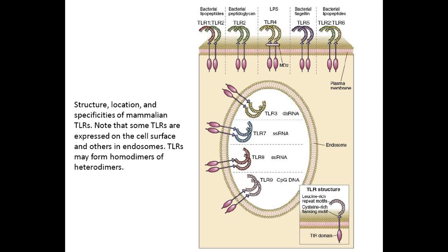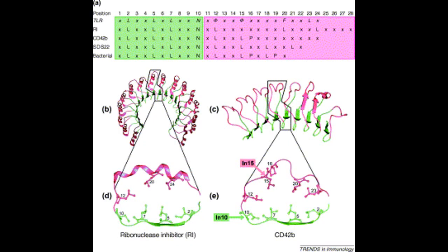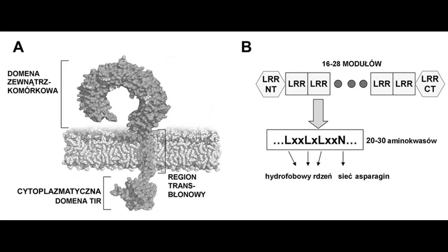Structure, location, and specificities of mammalian TLRs: Note that some TLRs are expressed on the cell surface and others in endosomes. TLRs may form homodimers or heterodimers. The structural basis of TLR specificities resides in the multiple extracellular leucine-rich modules of these receptors, which bind directly to PAMPs or to adapter molecules that bind the PAMPs. There are between 16 and 28 leucine-rich repeats in TLRs, each composed of 20 to 30 amino acids that include conserved LXXLXLXXN motifs, where L is leucine, X is any amino acid, and N is asparagine.